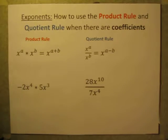When working with exponents, the product rule and the quotient rule are pretty easy rules that you can follow to simplify expressions whenever you need to.